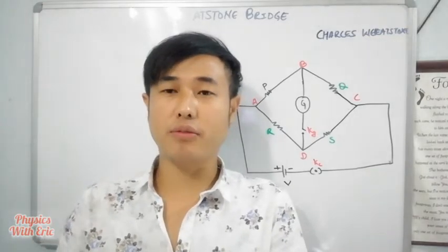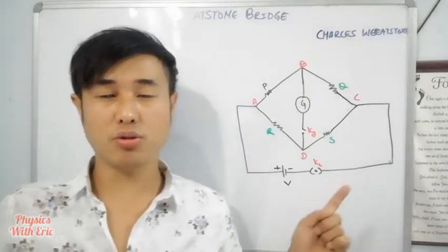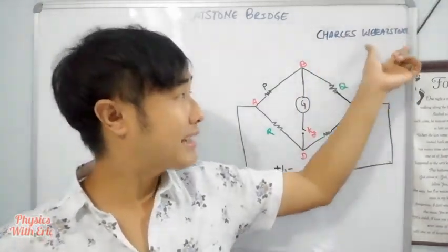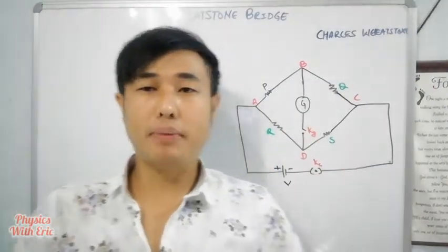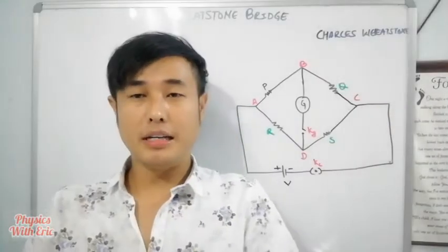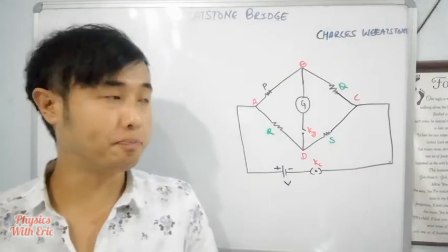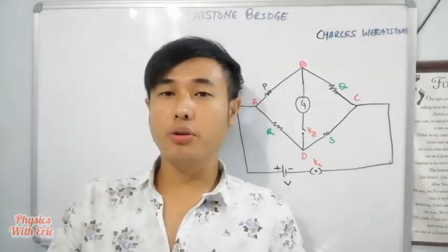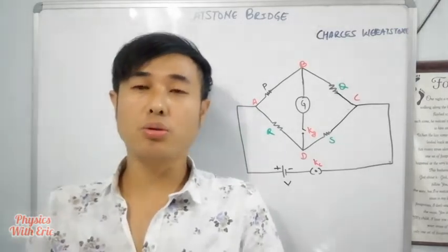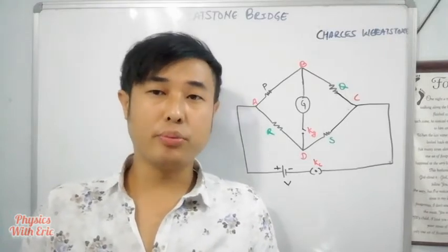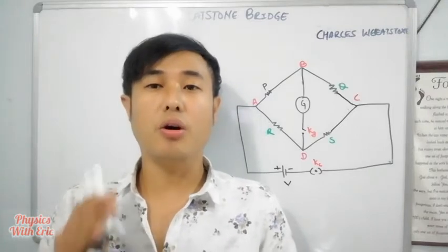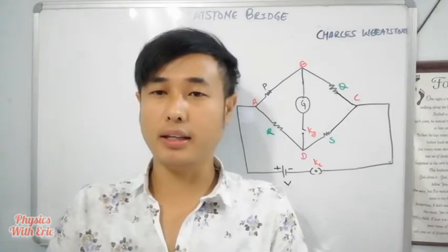If we need to find the value of unknown resistance, we use the Wheatstone Bridge. The Wheatstone Bridge is named after Charles Wheatstone. The Wheatstone Bridge is based on Kirchhoff's laws and is used for finding the value of unknown resistance.